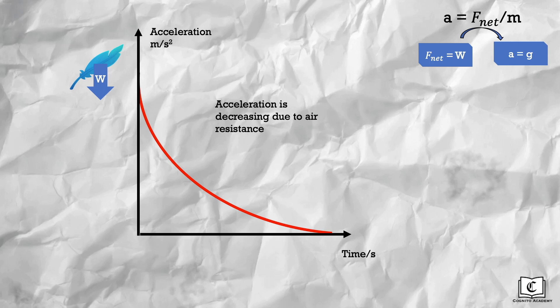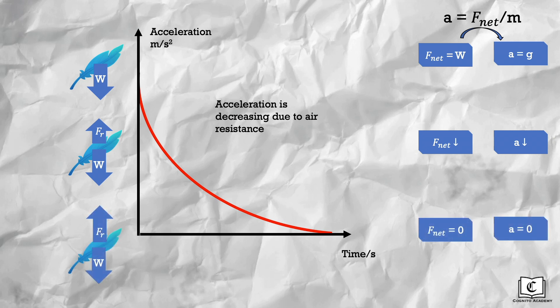But as the feather gains speed, more air resistance acts on the feather. And the net force on the feather decreases, and so does its acceleration. Feather gains speed to a point where air resistance cancels out the weight, and net force is zero at this point. And hence, acceleration is also zero.